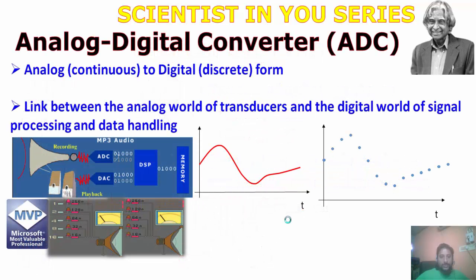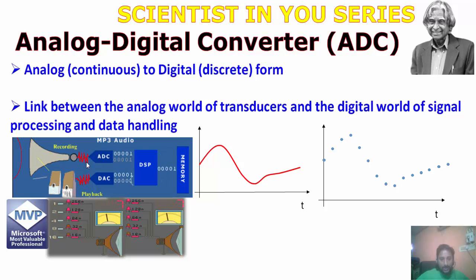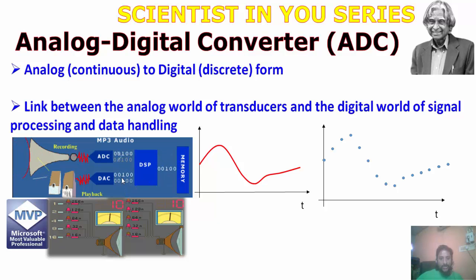Here comes your analog to digital converter. What is it exactly? You can see: I have audio signals, which are analog values. This analog value is converted into a digital value using an analog to digital converter — ADC. Afterwards, these digital values are stored in memory. The data is then retrieved as a digital value and converted back to analog using a digital to analog converter, and you can hear the audio again. This is how your analog to digital converter works.